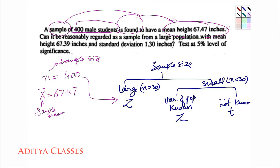Can it reasonably be regarded as a sample from a large population with a mean height of 67.39? Can it reasonably be regarded as a sample from a large population with a mean height of 67.39? So mean height of my population is 67.39. What is this?